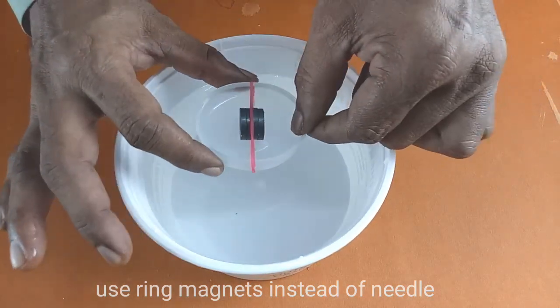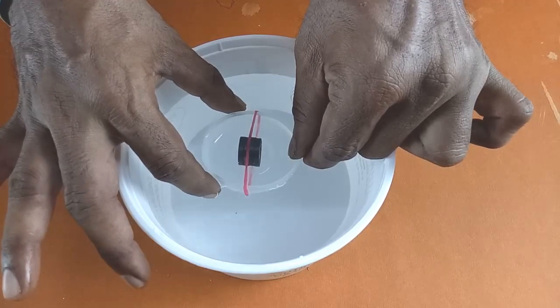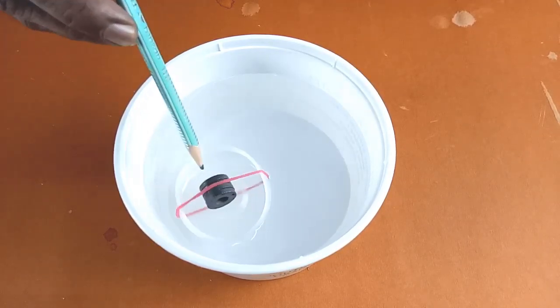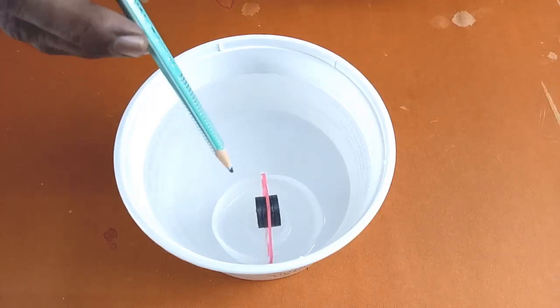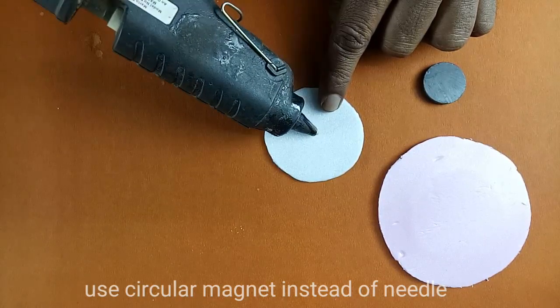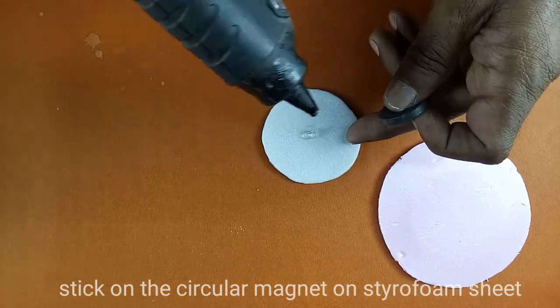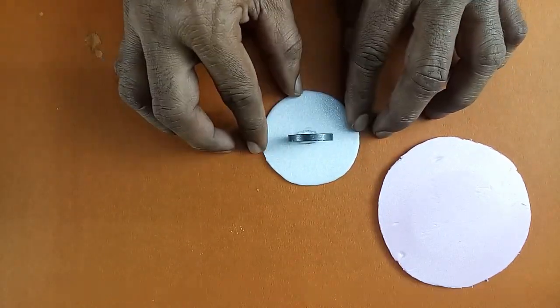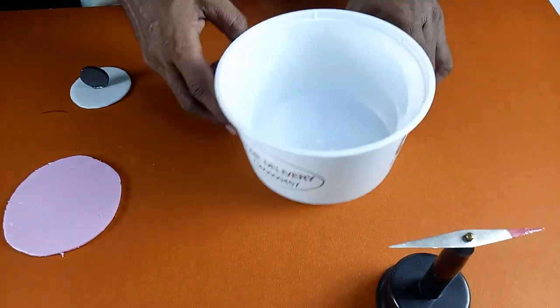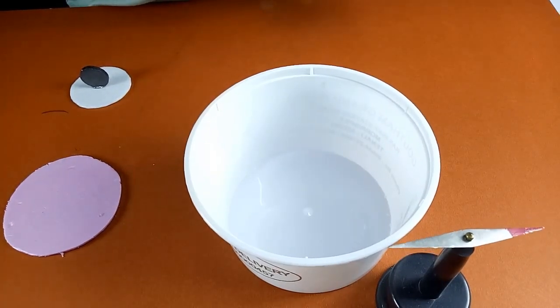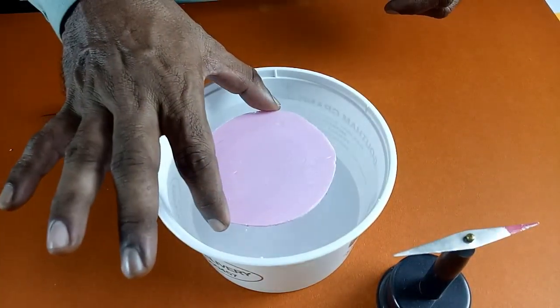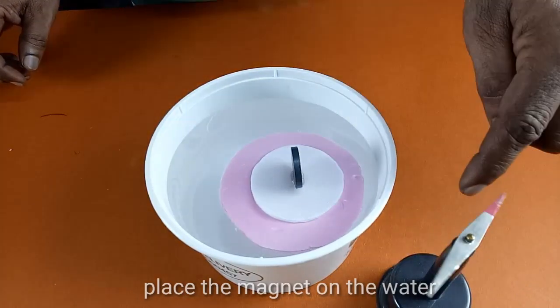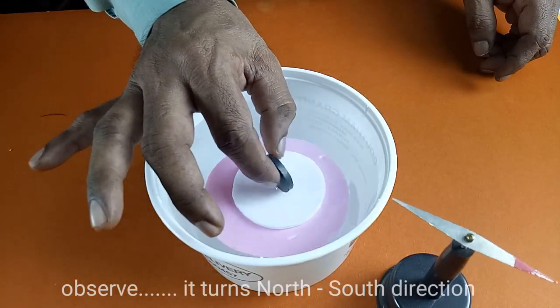Use ring magnets or circular magnet instead of needle. Place the magnet on water. Observe. It turns north-south direction.